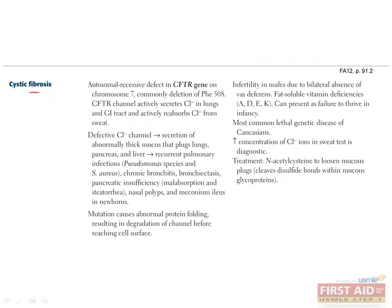Cystic fibrosis is one of the autosomal recessive disorders and is caused by a defect on the CFTR gene on chromosome 7, which stands for Cystic Fibrosis Transmembrane Conductance Regulator. CFTR codes for a chloride channel which actively secretes chloride in the lungs and GI tract and actively resorbs chloride from sweat.